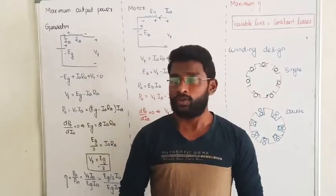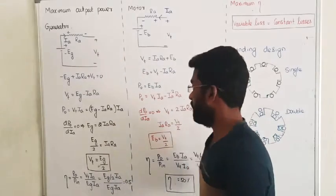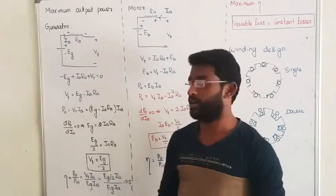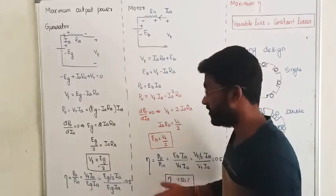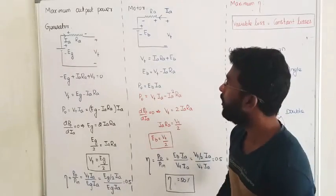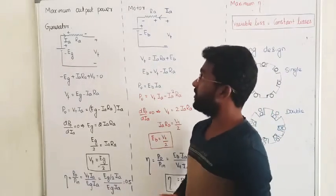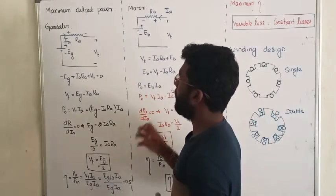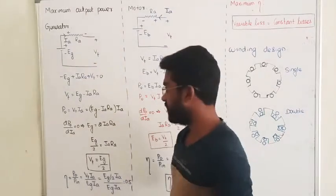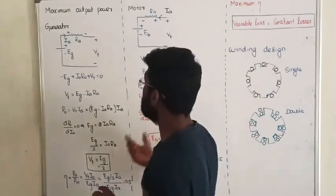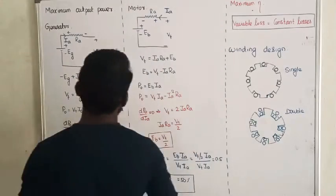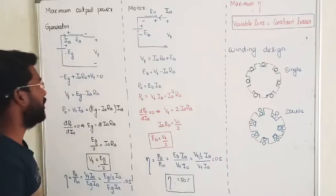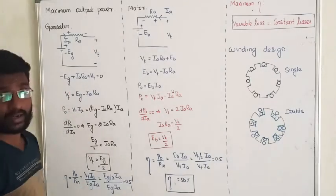Hello guys, so in the last lecture we saw the types of losses, efficiency calculations, power flow diagram and all. In this lecture we are going to keep our attention at the maximum power output — that is, under which condition we are going to absorb the maximum power at the output elements, whether it might be a generator or a motor.